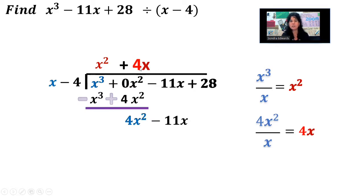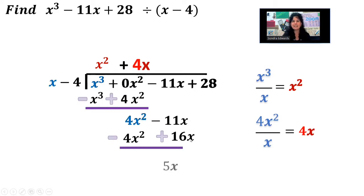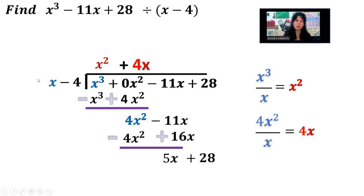Multiply 4x times each of the terms off to the side: 4x times x is 4x squared, 4x times negative 4 is negative 16x. Draw my line, subtract, run the negative all the way through — so this is going to be a negative, and running the negative through, it's going to change that to a plus. Combine: 4x squared minus 4x squared is nothing. Negative 11x plus 16x is 5x. Now we're going to drop down the 28 and start again. What's in front over what's in front: 5x over x simplifies to 5, so the 5 comes up here.